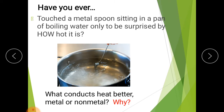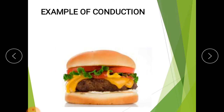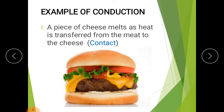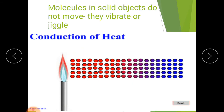What conducts heat better — metals or non-metals? Metals, because metals are solids. For example, a piece of cheese melts as heat is transferred from the meat to the cheese. There is also contact of the hot burger to the cheese, and that is why the cheese melts. This is also an example of conduction.